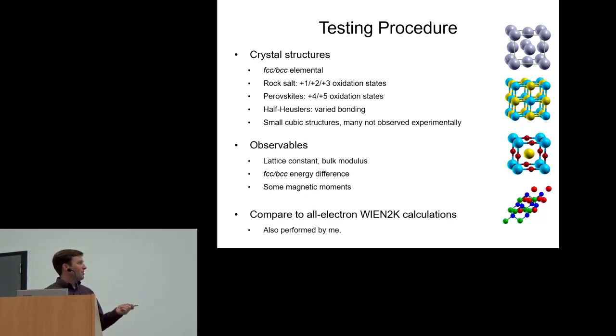The observables I looked at: lattice constant, bulk modulus, the energy difference between the FCC and BCC crystal structures, and also a little bit of magnetic moments of oxides, although a lack of magnetic testing was a problem with this initial test set.